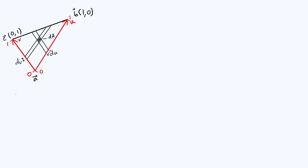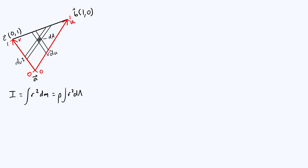Let's start by just writing down the definition of the moment of inertia. It's the integral of r squared dm, where r is the distance from the axis of rotation and dm is a little mass element within your shape. The first thing I'm going to do is turn this into an area integral by saying the mass element can be written as the area density times an area element. So if we call the area density — mass per unit area — rho, then we get rho times the integral of r squared with respect to area.